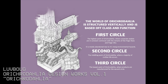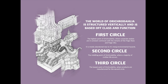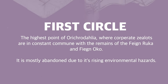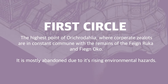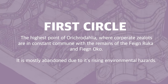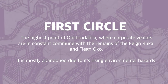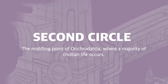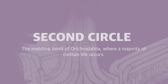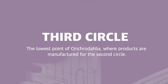The world of Oricredalia is structured vertically and is based off class and function. The first circle is the highest point, where corporate zealots are in constant commune with the remains of Fane Ruka and Fane Oko — it is mostly abandoned due to rising environmental hazards. The second circle is the middling point where a majority of civilian life occurs, and the third circle is the lowest point where products are manufactured for the second circle.